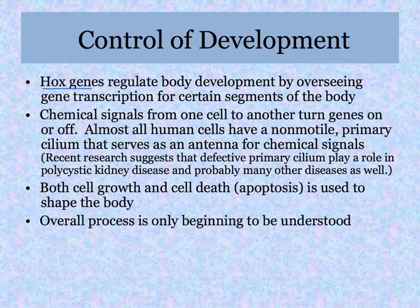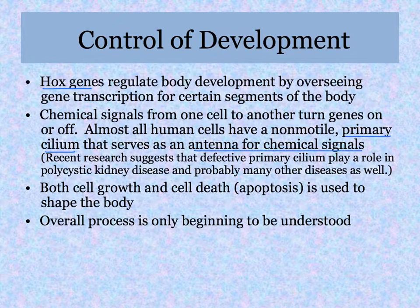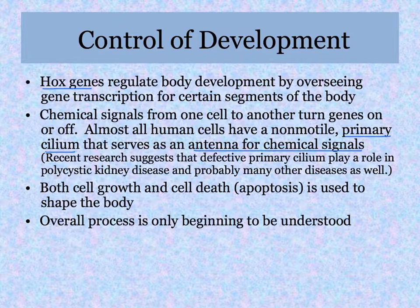Almost all human cells have a primary cilium — a non-motile, stationary cilia that serves like an antenna for chemical signals coming from genes. As genes are turned on and off they produce proteins that are messages to other cells. Recent research suggests that defective or partially functioning cilia are involved in many diseases. Polycystic kidney disease has been specifically identified as caused by a defective primary cilium, and this hints that other diseases may result from cells not receiving needed developmental signals, causing problems right away or many years later.